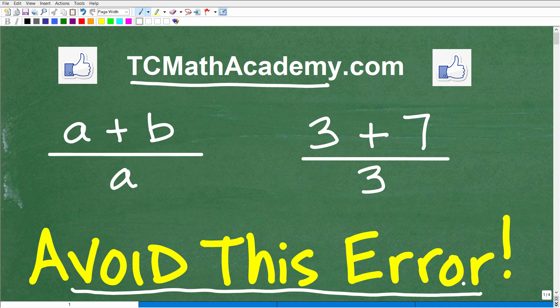Here we have an expression a plus b over a, and here we have 3 plus 7 over 3. Go ahead and simplify each of these and put your answer in the comments section.